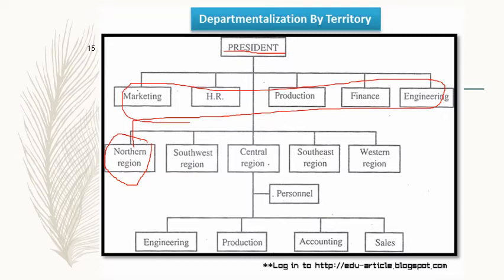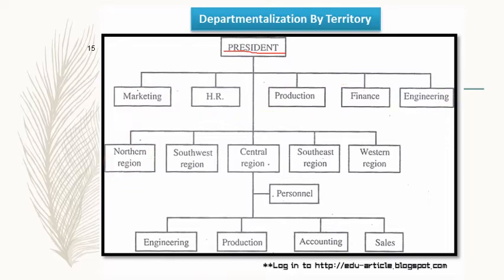The best example is Indian Railways: we have Southwest Railway, Southern Railway, Northwest Railway, Northeast Railway, Central Railway, and Konkan Railway. Each has its own recruitment, HR, marketing, and production functions and is responsible for generating its own profit. They are totally autonomous. This is the functioning of departmentation by territory.